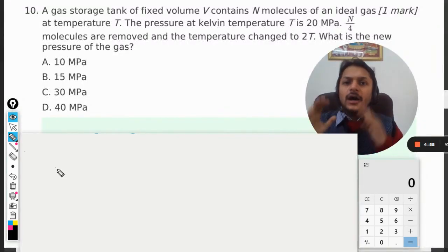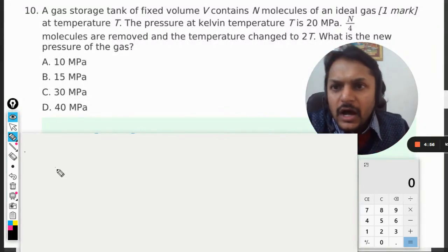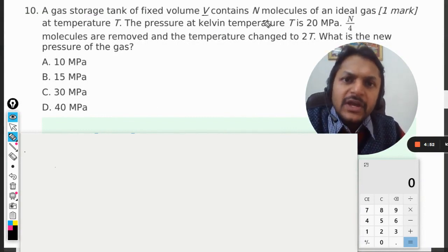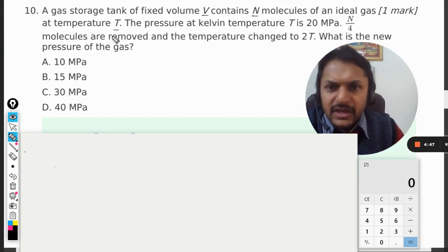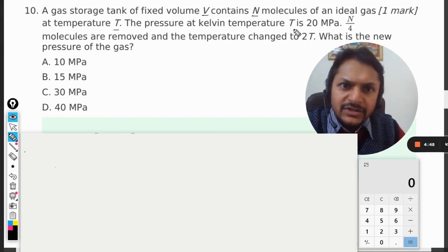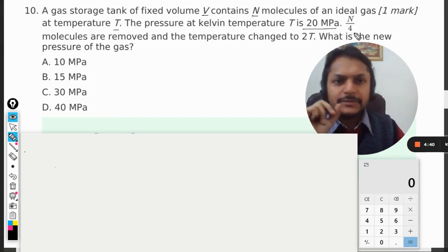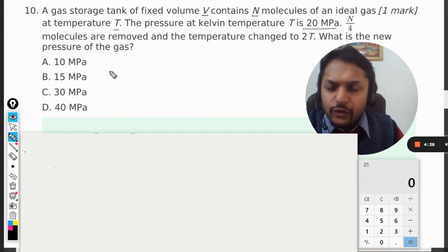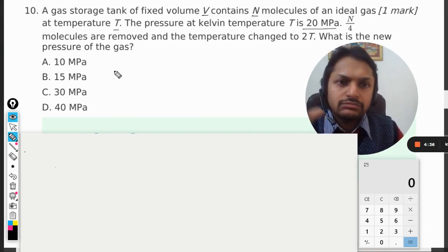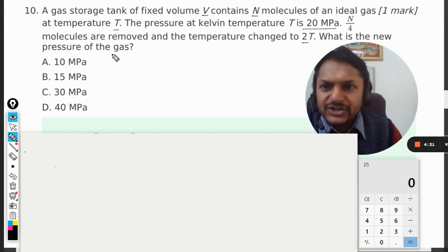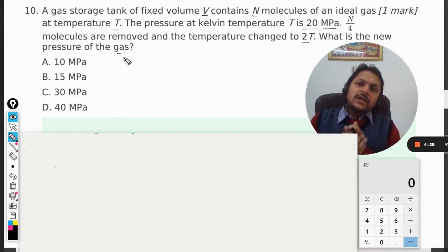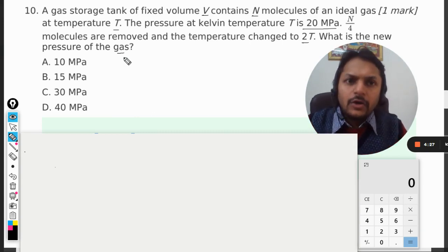Okay dear students, let us see how we are going to do this. A gas storage tank of fixed volume V contains N molecules of an ideal gas at temperature T. The pressure at Kelvin temperature T is 20 MPa. N/4 molecules are now removed, so 3/4 is left. The temperature is changed to 2T. What is the new pressure in the gas?